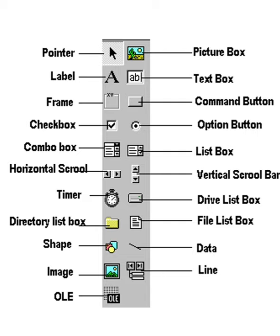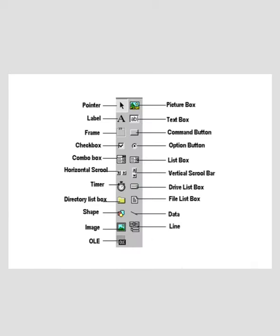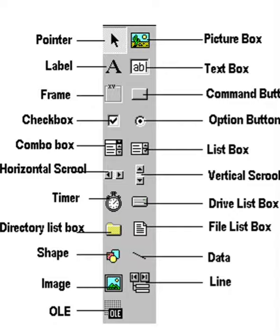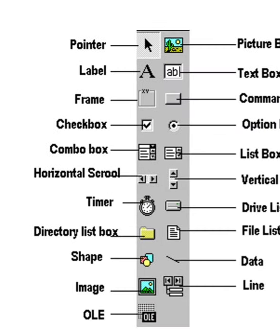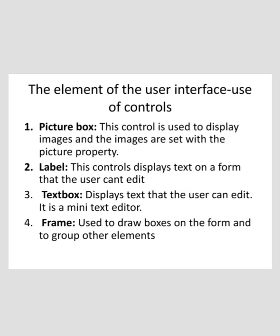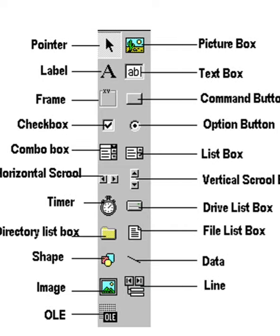Let's see all these elements one by one. The first element is the Picture Box. This control is used to display images; the images are set with the picture property. The second is the Label. This control displays text on a form that the user cannot edit. Set the label's text with the caption property. The third is the Text Box. It displays text that the user can edit — it is a mini text editor. The text property can set or read the text that the user enters.